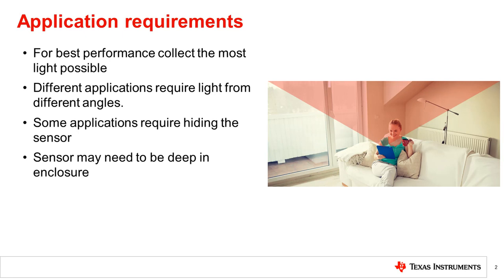The goal for best light sensor performance is to collect the most amount of light possible from an area of interest. The area of interest may consist of the entire room in the case of display brightness adjustment, or a specific area in the case of IR night vision or indoor lighting. As shown in the image, the ambient light sensor used for tablet display brightness adjustment needs to cover a wide area for best performance. Different applications will require sensing light from different angles. Further, some applications require hiding the sensor, or the sensor may even be required to be deep within an enclosure. All of these considerations will be covered in this video.